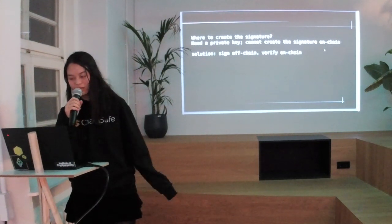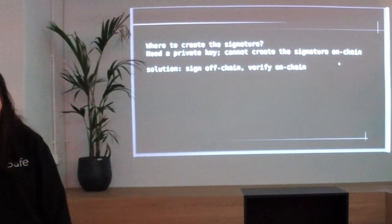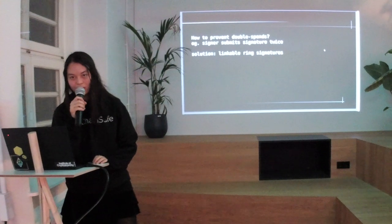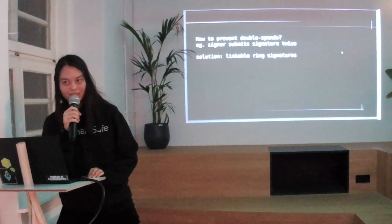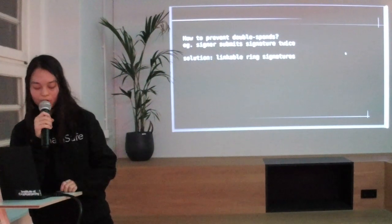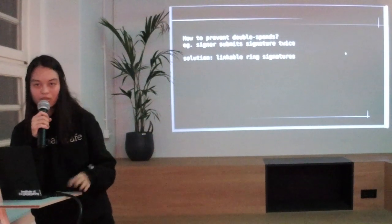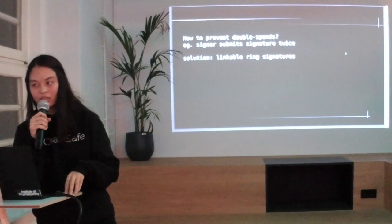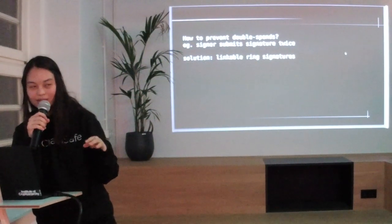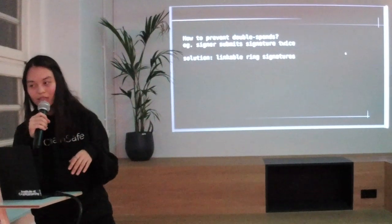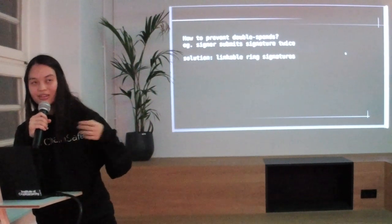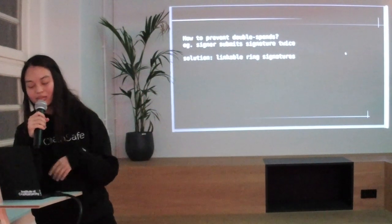You can't create a signature on-chain since you'd need the private key, so you'd have to sign off-chain and then do only the verification on-chain in the contract. As for how to prevent double spends: similarly to how Monero does it, you would prevent double spends by using linkable ring signatures. This is a variation on the original ring signature algorithm. Linkable ring signatures add a key image to the signature — it's like an obfuscated image of the person who actually signed it. You can't tell who signed it from the key image, but you can tell if two signatures share the same key image that they were signed by the same person. This would prevent a double spend: if you try to submit a signature to the contract again but only submitted one deposit, it gets rejected.